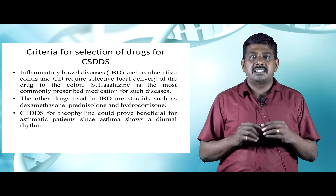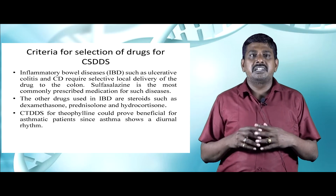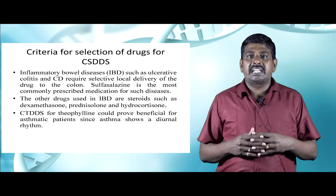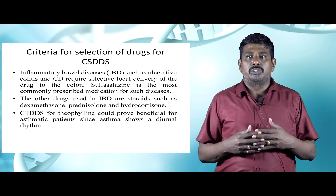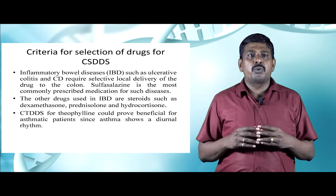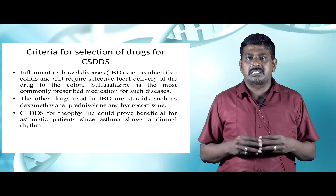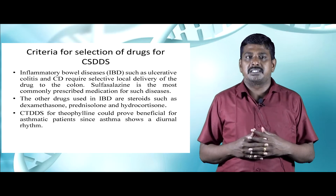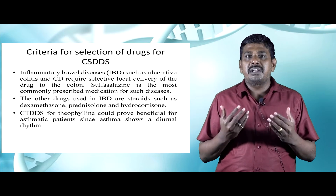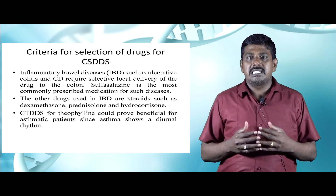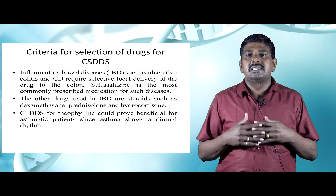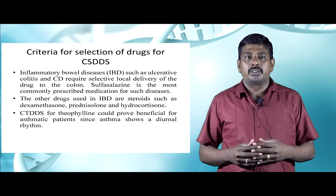Inflammatory bowel disease, such as ulcerative colitis and Crohn's disease, requires selective local delivery of the drug to the colon. Sulfasalazine is the most commonly prescribed medication for such diseases. Other drugs used in inflammatory bowel disease include steroids such as dexamethasone, prednisolone, and hydrocortisone.